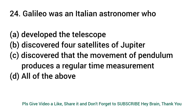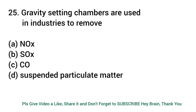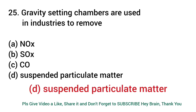Galileo was an Italian astronomer who? Answer: All of the above — developed the telescope, discovered four satellites of Jupiter, and discovered that the movement of a pendulum produces a regular time measurement. Gravity settling chambers are used in industries to remove? Answer: Suspended particulate matter.